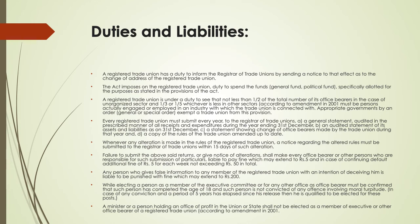Any person who gives false information to any member of the registered trade union with an intention of deceiving him is liable to be punished with a fine which may extend to Rs. 100. While electing a person as a member of the executive committee or for any other office as office bearer, it must be confirmed that such person has completed the age of 18 and has not been convicted of any offence involving moral turpitude. Lastly, a minister or a person holding an office of profit in the union or state shall not be elected as a member of the executive or other office bearer of a registered trade union.